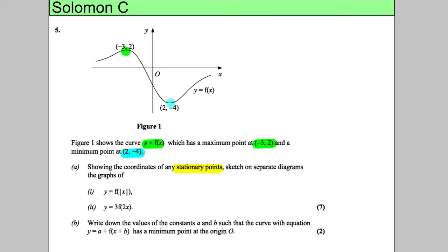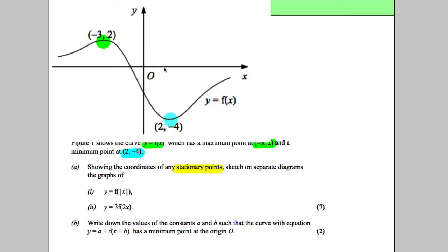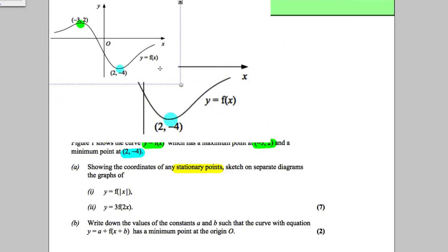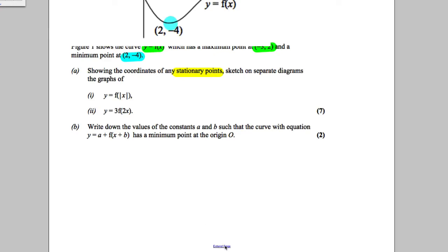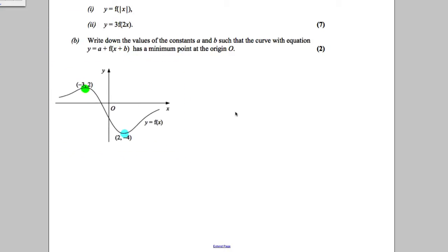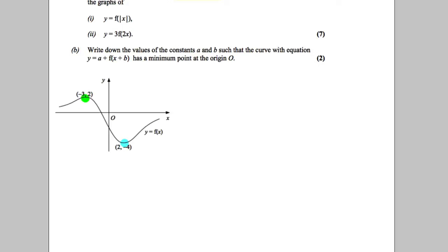So let's do that bit by bit. I've always got a copy of this, so let me just quickly take a photo of the curve. The first thing we want to draw is f of the modulus of x. You should know these by now. For y equals f of the modulus of x, what you do is you copy the curve from x equals 0 onwards,